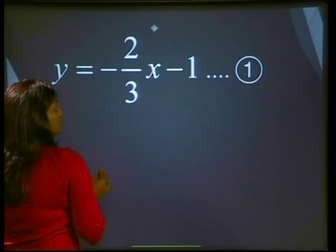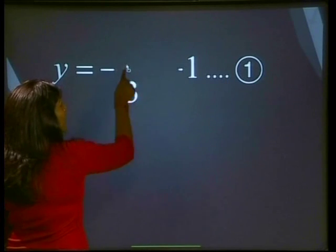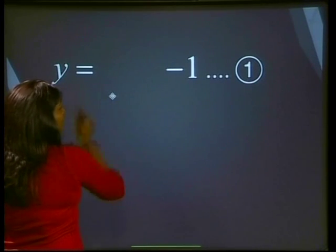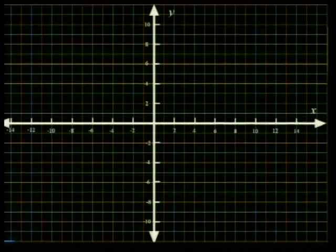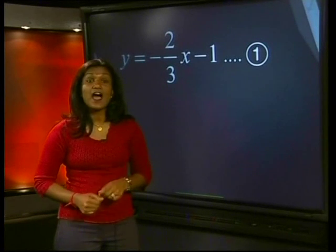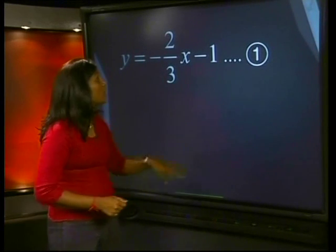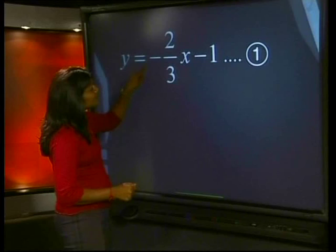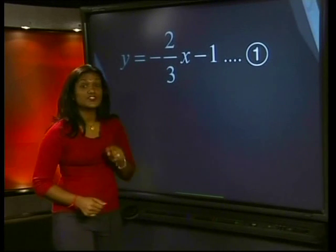In the first equation, the y-intercept is where x is equal to 0. This means that y is equal to minus 1. That's this point over here. To find another point on the line, I use the gradient, which is the coefficient of x. In this case, it is negative two-thirds. So the gradient is a negative. Okay, so we move two units up.